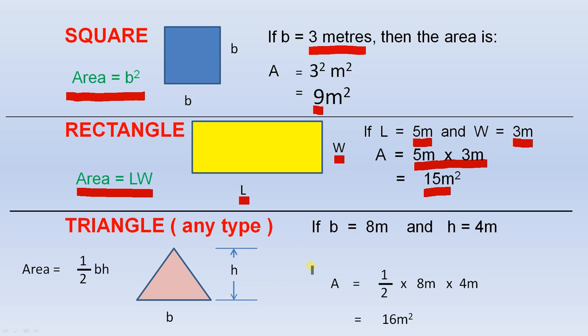The area for a triangle, now this is any type of triangle. All you need to find the area of a triangle is the length of the base and the perpendicular height. Once you have those two measurements, the area is half base times height. That's the perpendicular height.